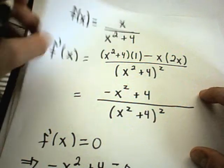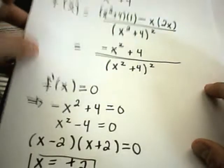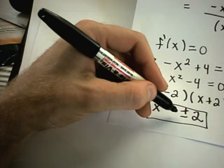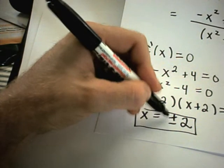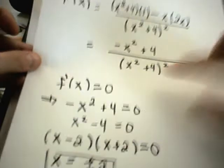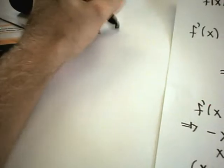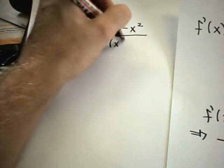Now the next thing I have to do is take the second derivative, and then plug these numbers in to see if the second derivative is positive or negative, which will tell me whether I have a maximum or a minimum. Here's my first derivative from before, and I'm going to rewrite it as 4 minus x squared, all divided by x squared plus 4 quantity squared.